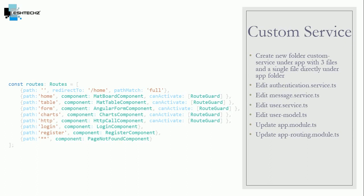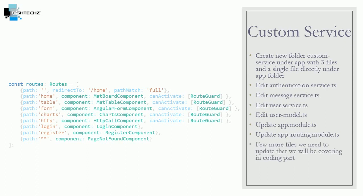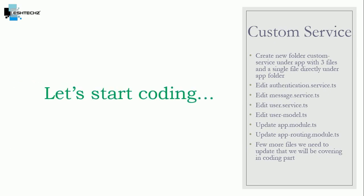After this we will be updating app dot routing dot module dot ts. In this file we will be adding our new components and updating the old routes with canActivate. Apart from these changes, a few more files we need to update that we will be covering in the coding part. Let's start coding.